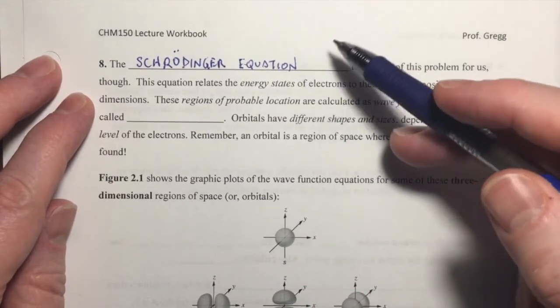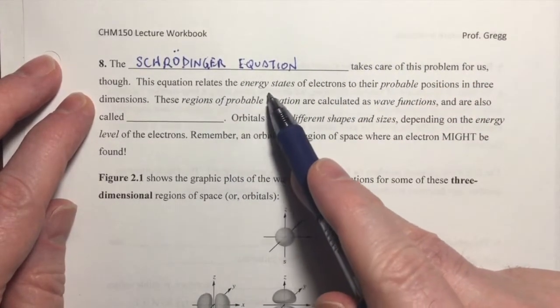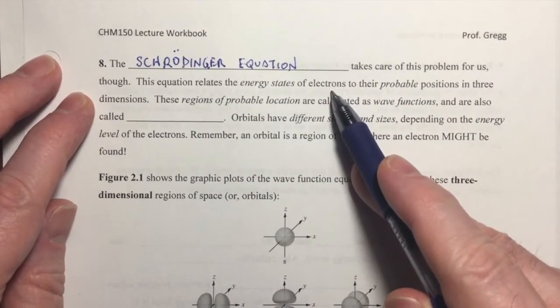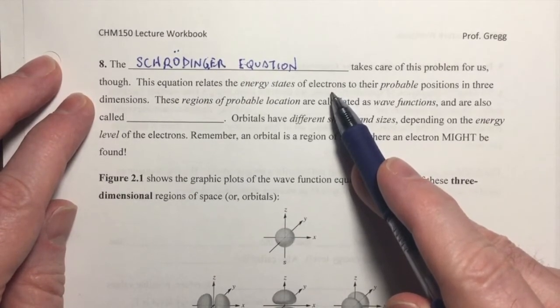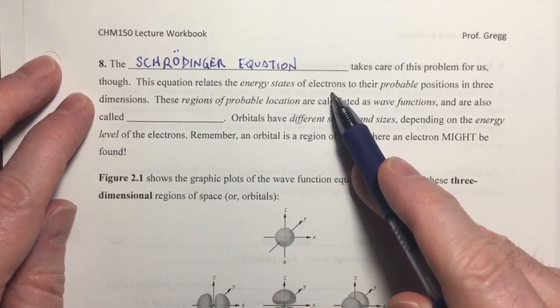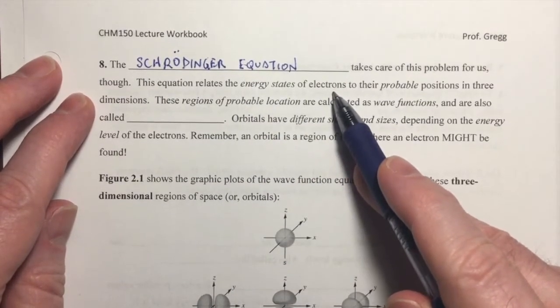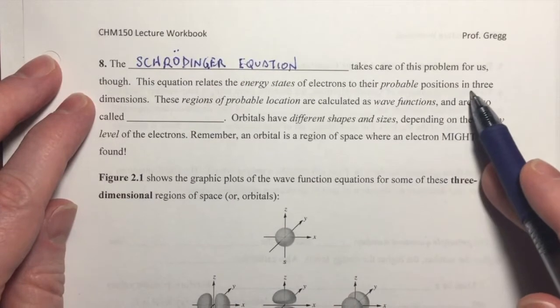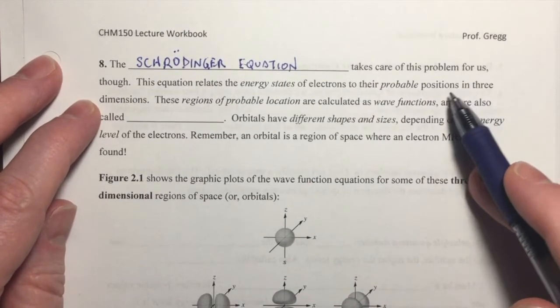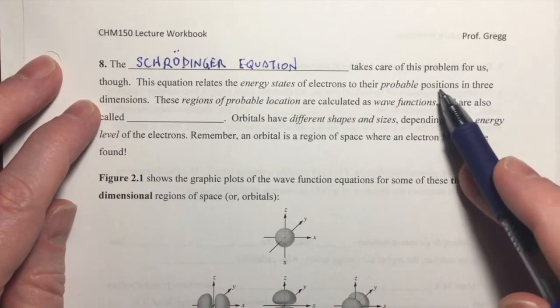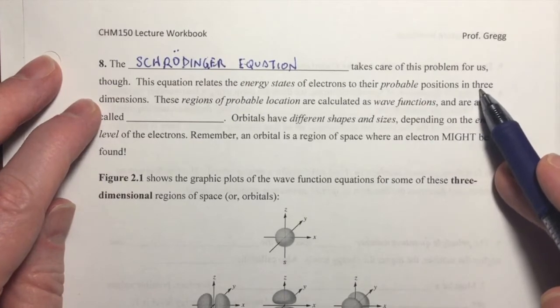And the Schrödinger equation relates the energy states of electrons, and we've talked about those before, the n equals 1, n equals 2, n equals 3, and so forth. Those are the quantized energy states of electrons to their probable positions, where you might find them, their probable locations in three-dimensional space.